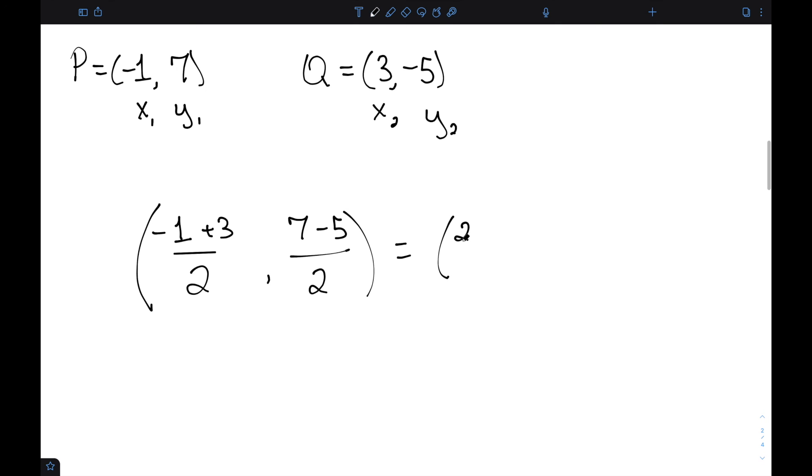-1 + 3 is 2, and 7 - 5 is 2. So the midpoint here would be (1, 1).